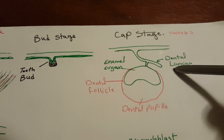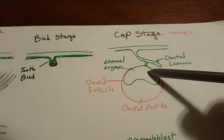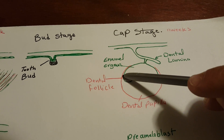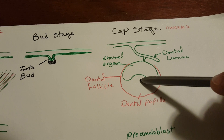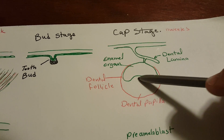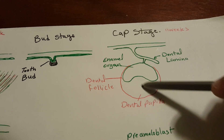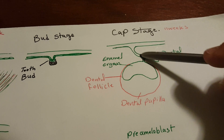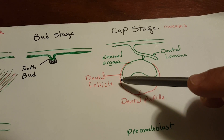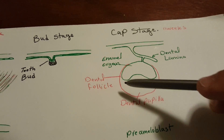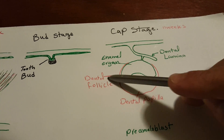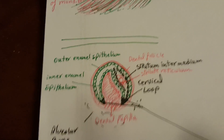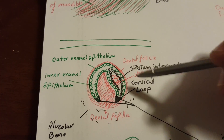At about nine to eleven weeks, the dental lamina extends to form the enamel organ, which is inside what's called the dental sac. The dental sac is formed of the dental follicle and the dental papilla. The dental papilla is basically the ectomesenchyme of the jaw, which is squeezed to form the dental papilla. The enamel organ together with the dental sac — containing the dental follicle and dental papilla — is called the tooth germ.